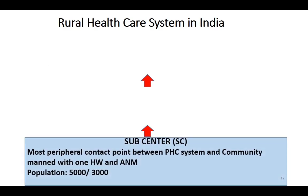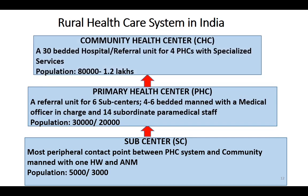In rural areas, the sub-center is the most peripheral contact between the primary healthcare system and the community. In the sub-center, there is one healthcare worker and an ANM — the ANM is the head. There are no doctors at the sub-center. Population covered is 5,000, and in hilly or difficult terrain areas it is 3,000. Everyone needs to know the population covered by each center and who is present.